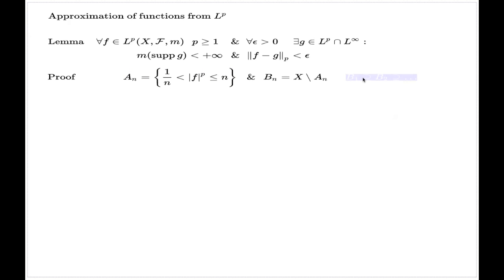First thing I claim is that B's, they produce a decreasing sequence of subsets. Also I claim that if I take the union of all A_n's, that will return the support of f.